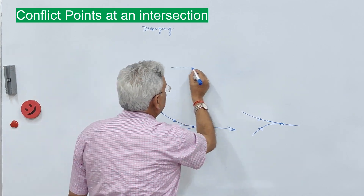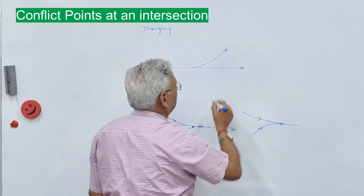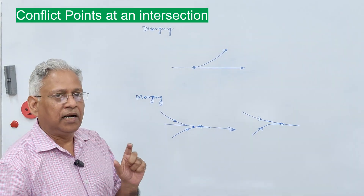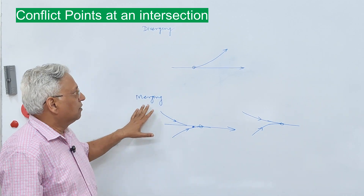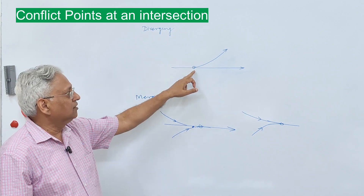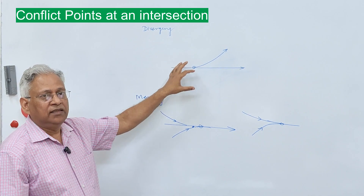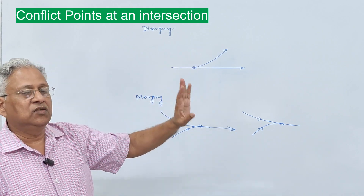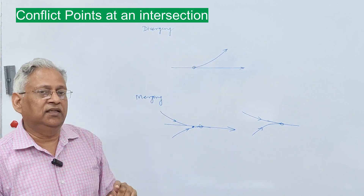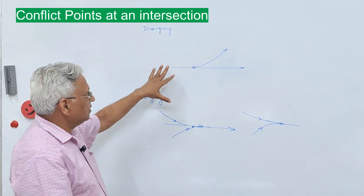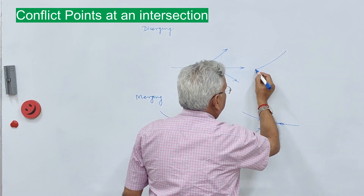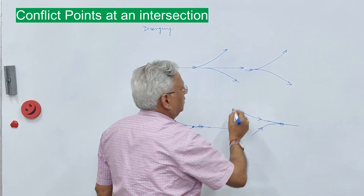When a traffic stream or a vehicle leaves the lane and diverges into a different direction, that is a diverging movement. Diverging movement is also a minor type of conflict, as in the case of merging. Merging requires a gap — if a vehicle has to merge with the main stream, it requires a certain gap. But diverging does not require any gap; it only requires giving a signal to the following vehicle and then leaving the lane. That is why in some textbooks, diverging is not considered a conflict point, but it is a conflict point of minor nature.